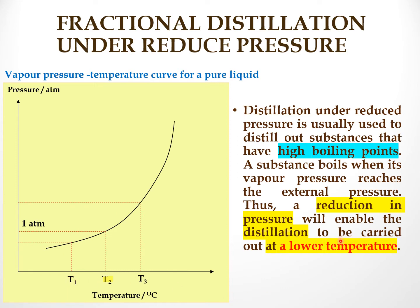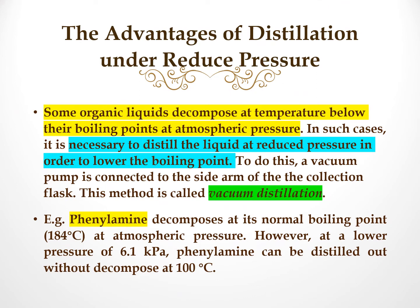The substance will be distilled out at a lower temperature. What is the advantage of distillation under reduced pressure? This is when certain organic liquids can decompose at temperatures below their boiling points at atmospheric pressure. It is necessary to distill the liquid at reduced pressure to lower the boiling point. To do this, a vacuum pump is connected to the sidearm of the collection flask. This method is called vacuum distillation.